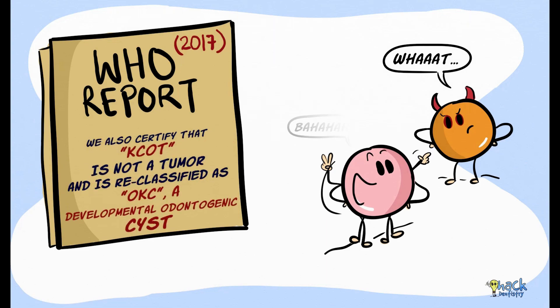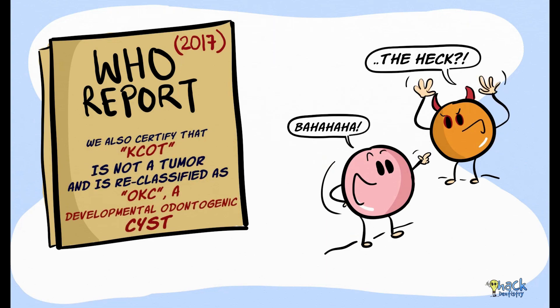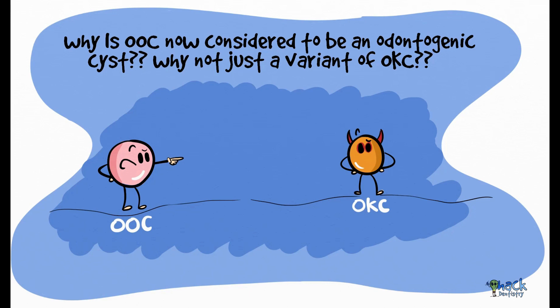Also, the WHO consensus group has removed keratocystic odontogenic tumor from the odontogenic tumor category and has reclassified it as an odontogenic cyst. So why is ortho-keratinized odontogenic cyst considered to be a distinct odontogenic cyst and not just a variant of odontogenic keratocyst?